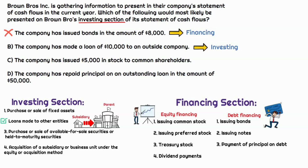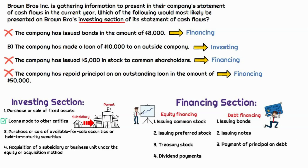The company issued $5,000 in stock to common shareholders. When we issue common stock, shareholders give us cash and we use it to enhance the business — that's financing, not investing, so that's incorrect. The last item: the company repaid principal on an outstanding loan of $50,000. Payment of principal is number three under debt financing in the financing section visual — that goes in financing. Interest would go in operating, but either way, it's not investing. So the only item going in the investing section, and the correct answer, is the company made a loan of $10,000 to an outside company.